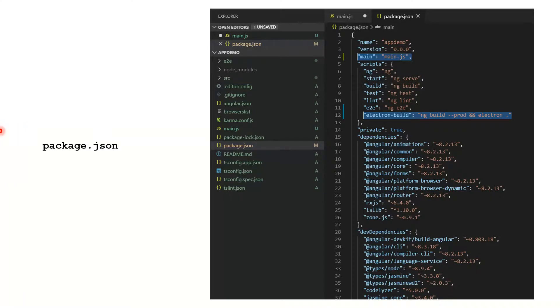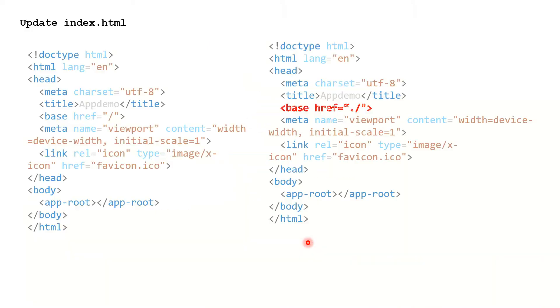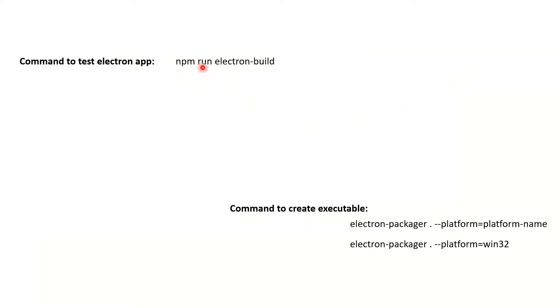In package.json, we'll be adding an entry point and a script command for building the Electron app. Finally, you have to update index.html — just add a dot before the base href. This makes it compatible with Electron. To test it you use the build command, and to create an executable you use the packager command. The platform flag may differ — I'm using Windows so it's win32.